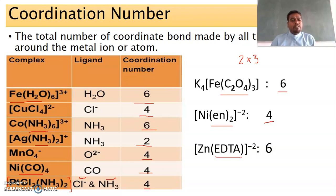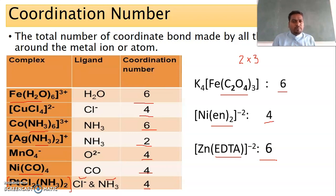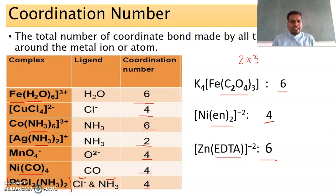EDTA — ethylenediamine tetraacetate — is a hexadentate ligand; it can form six bonds with the central metal ion, so the coordination number is six. So dear students, it is very easy to identify the coordination number once you are familiar with the nature of the ligand. If the ligand is monodentate, the total number of ligands equals the coordination number. If it is bidentate, multiply the total number of ligands by two; for tridentate, by three; and so on. Just by looking at the complex, you can identify the coordination number of the central metal ion.